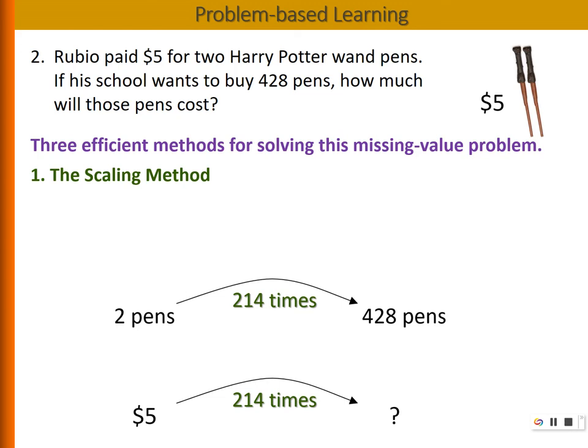In fact, the scaling method is related to the build-up method. The difference is that instead of adding two at a time and doing it for 214 times, the scaling factor method is just multiply 2 by 214.